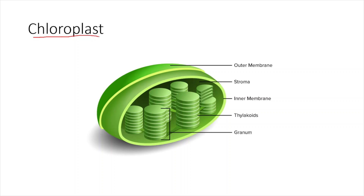Chloroplast contains the photosynthetic pigment chlorophyll. To give you a brief idea about the structure of chloroplast: the first part is the outer membrane, which is the most external layer of the chloroplast. Next to the outer membrane you have the stroma, which is the second layer from outside to inside. After the stroma, the next layer is the inner membrane — the third layer.